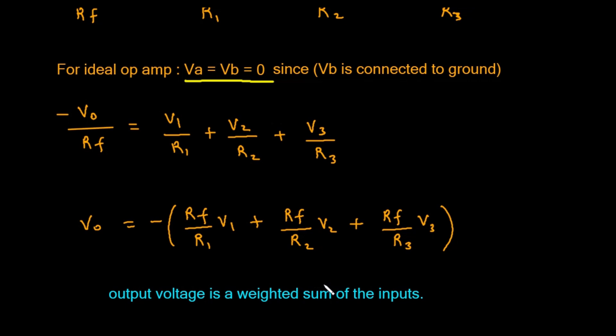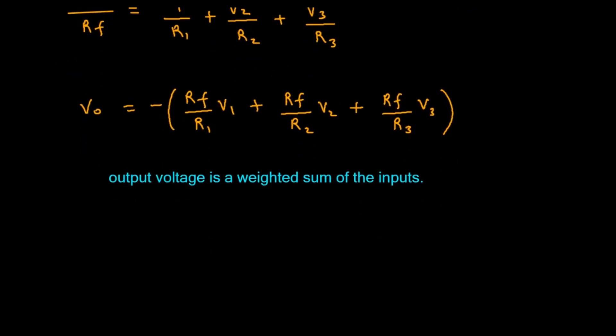Let's imagine the simplest case. What if we make all the resistors identical? Let's say R1, R2, R3, and Rf are all the same value. In that case, the ratio of Rf divided by R1 is 1, Rf divided by R2 is also 1, and so on.